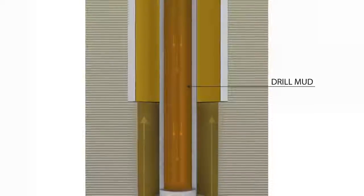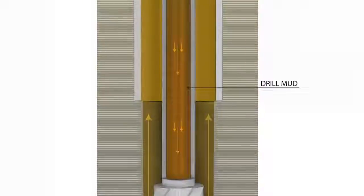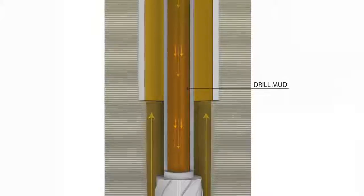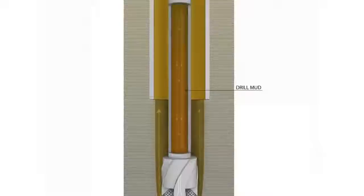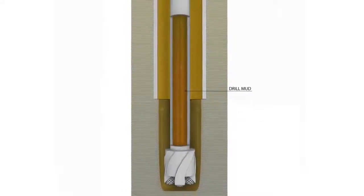To prevent kicks, drillers pump a dense slurry called drilling mud into the well, creating a barrier between the undersea oil and gas and the piping that leads to the rig. If this mud barrier fails or is somehow removed, the safety of the drilling crew depends on a critical piece of equipment located on the sea floor.